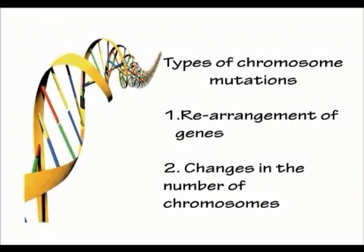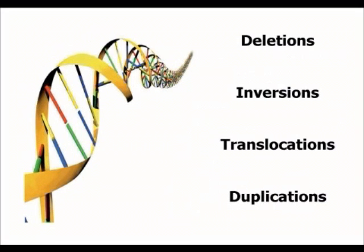When we're looking at the rearrangement of genes, they can be split into four different ways that this can happen. You'll see some terms that have already been used in gene mutations here.